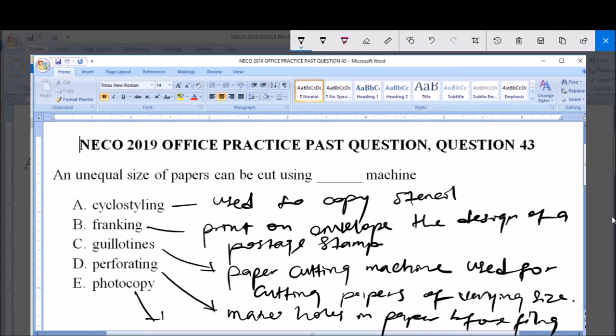And E, photocopy machine. The photocopy machine is used to make exact copies of an original document.